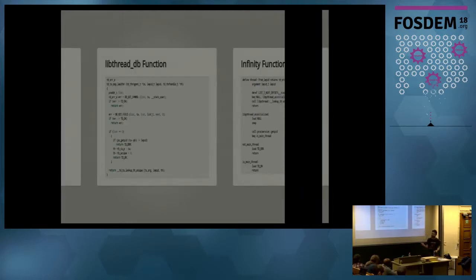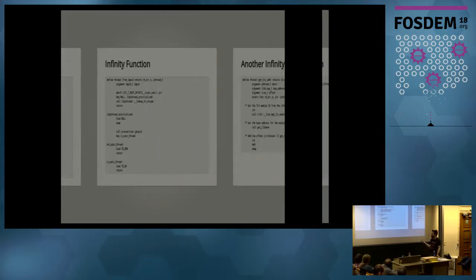I'll do it really quickly because nobody wants to look at code. Basically this is a function in LibThreadDB — it's getting the address of a symbol, doing some little special case logic with it, and that's what it looks like in C. The Infinity version of it is basically the same length: it's loading the thing, doing the little special case, and that's it.